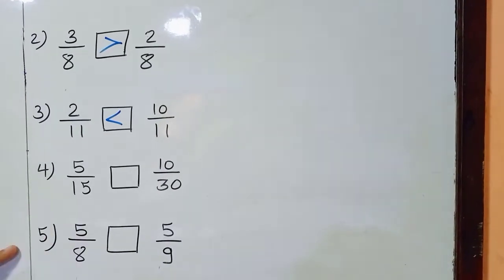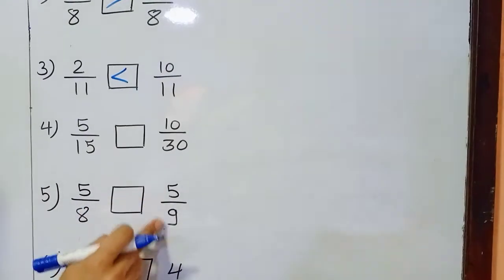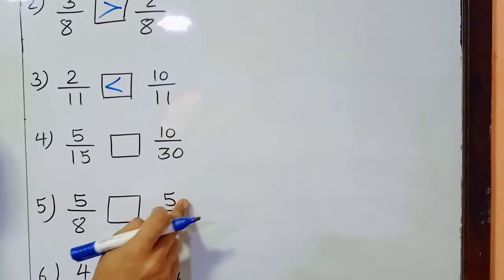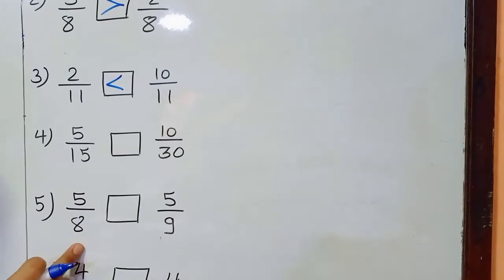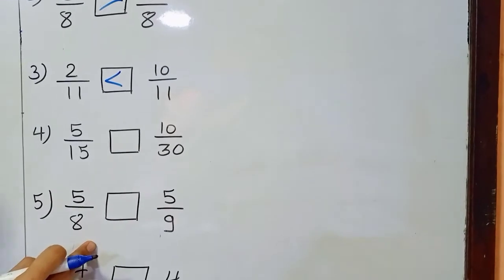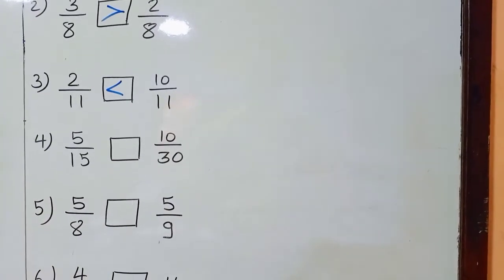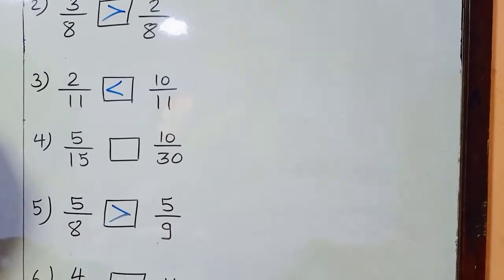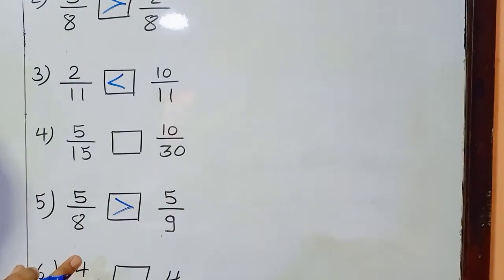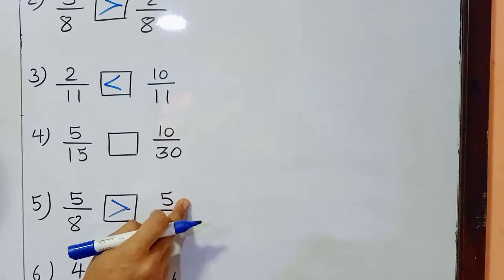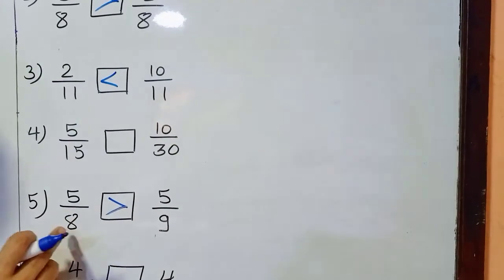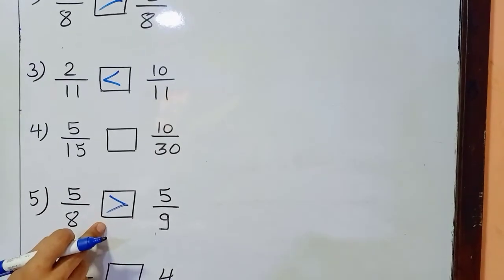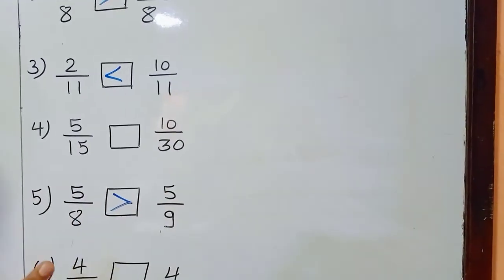Now, for the fourth one: 5 upon 8 and 5 upon 9. Here we can see the numerators are the same, so we have to decide regarding the denominator. Whenever we decide by the denominator, the smaller denominator is actually the greater fraction. So 8 and 9 — which is the smaller? 8. Therefore 5 upon 8 is greater than 5 upon 9. Once again: with equal numerators, the smaller denominator means that fraction is actually the greater one.